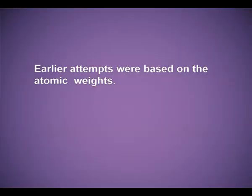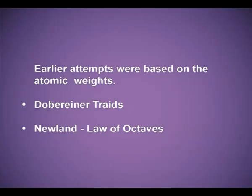Today we will study about what attempts led to the formation of the periodic table. Earlier attempts were based on atomic weights. Döbereiner said that similar elements exist in groups of three elements, and he called these groups triads. Newlands gave the Law of Octaves.